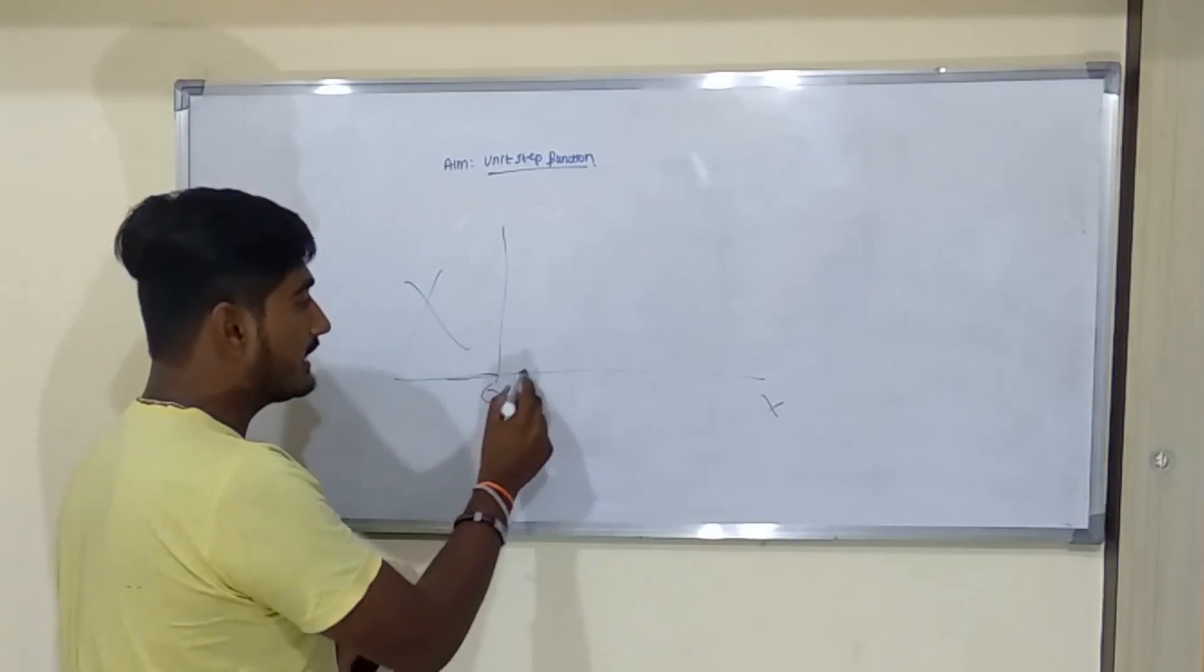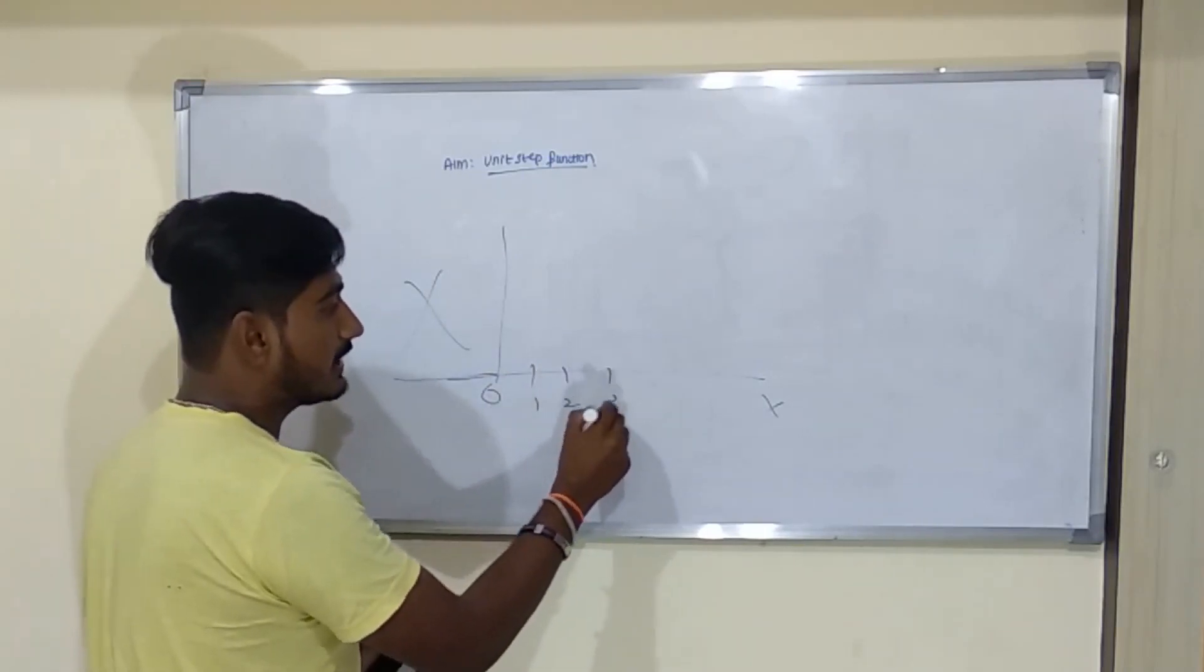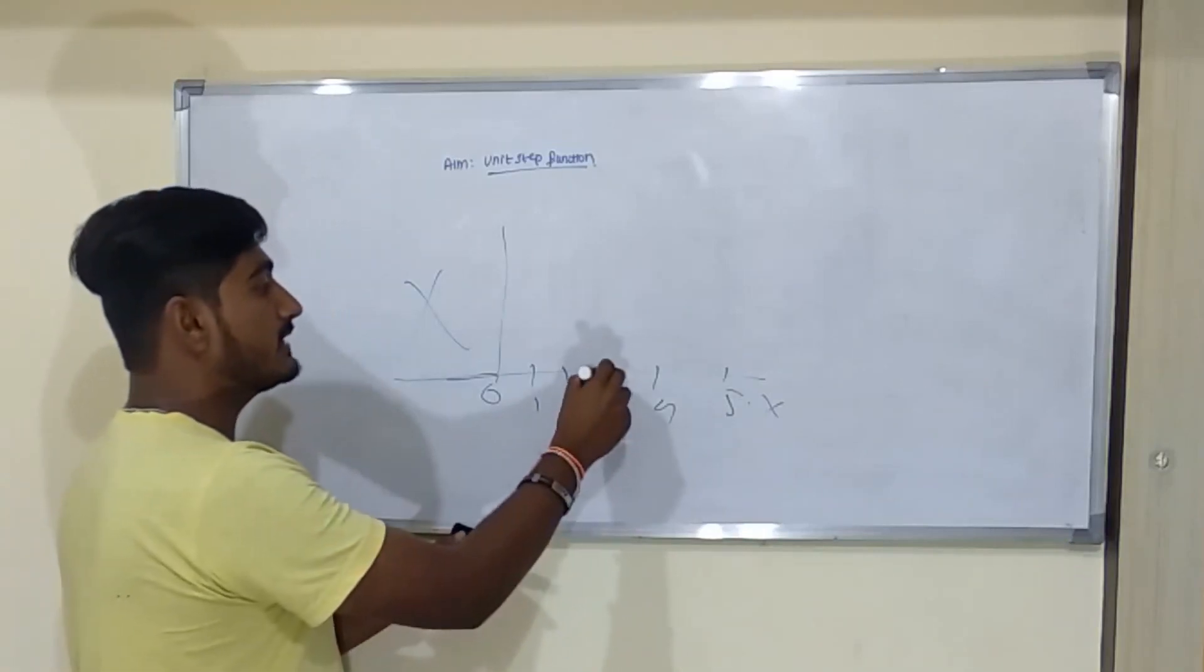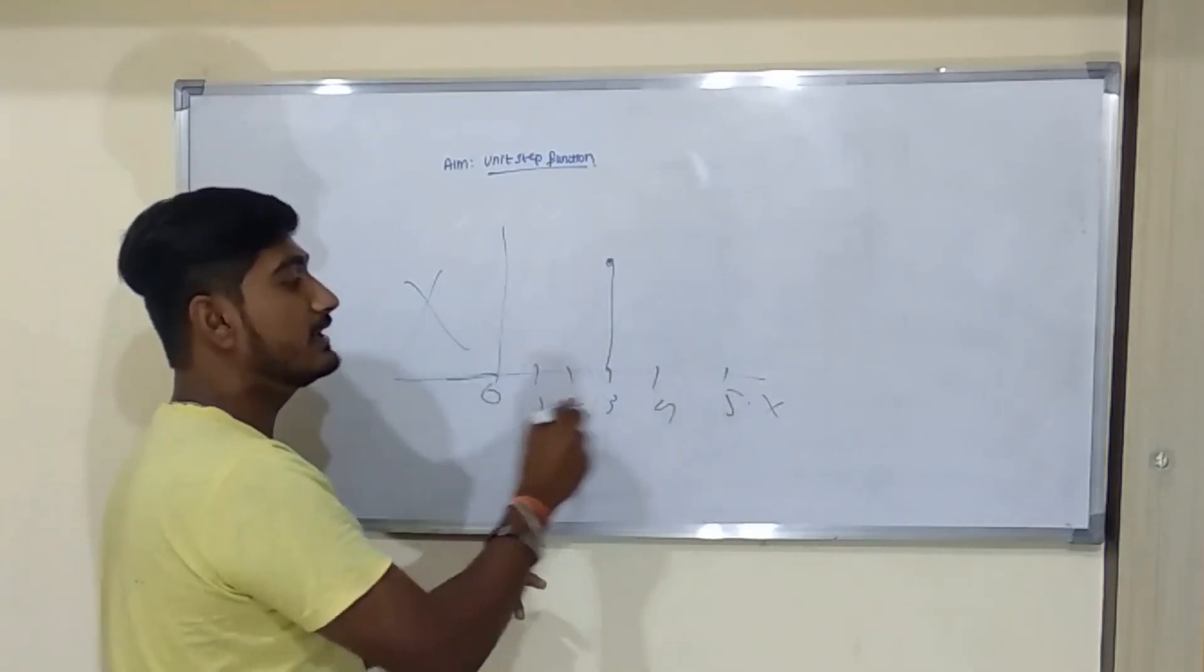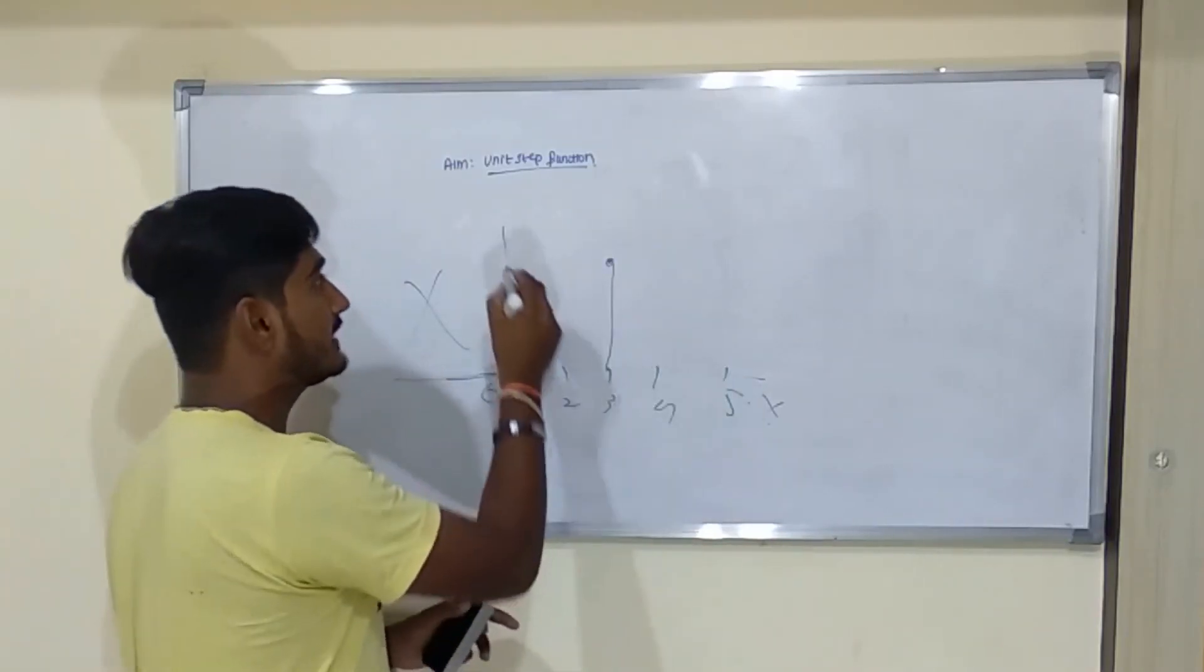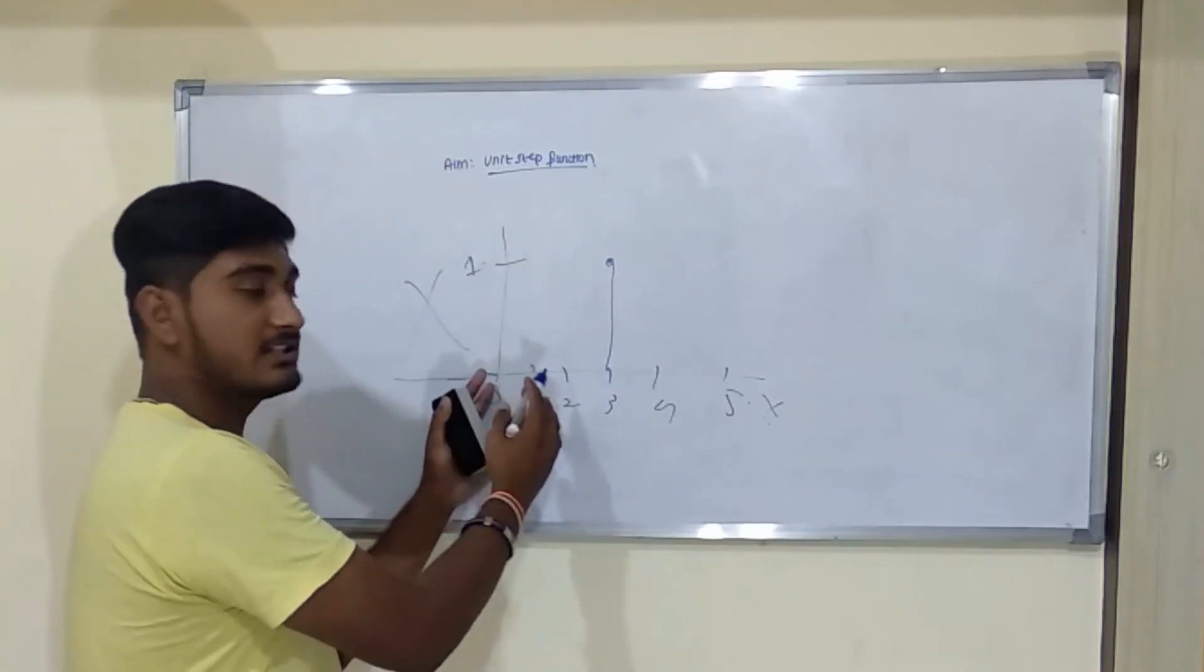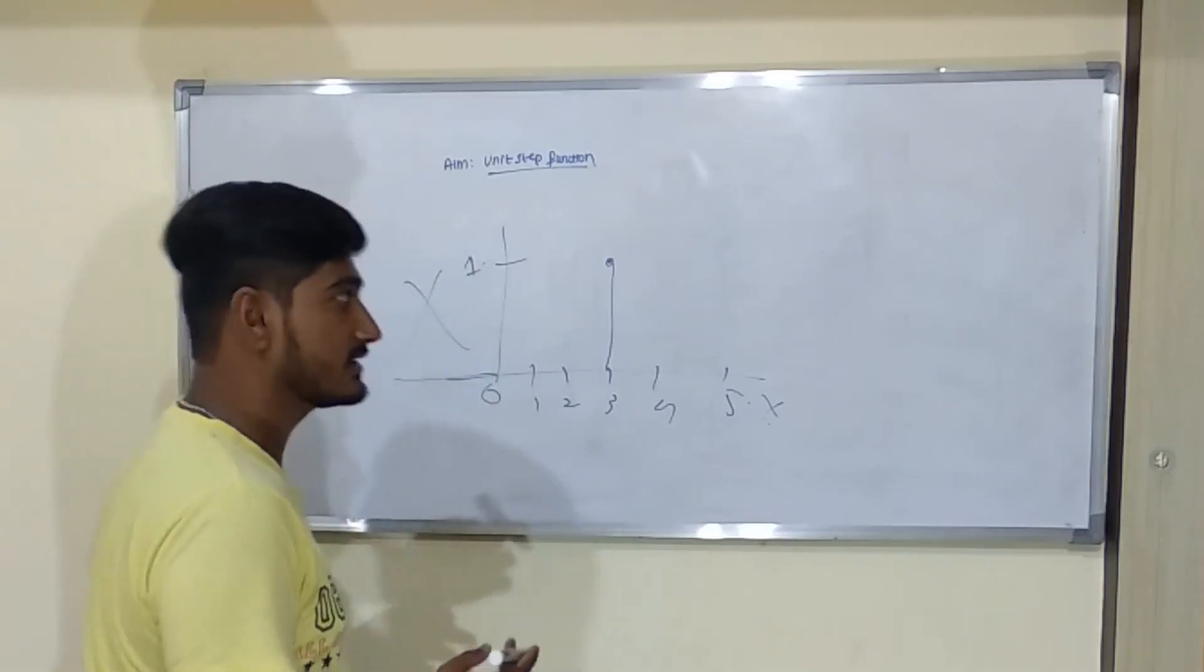It will start from 0 and keeps on attaining a value of height, which can be anything. It can take any value at any positive x-axis, it will take the value of height 1. So this type of graph is represented as a unit step function.